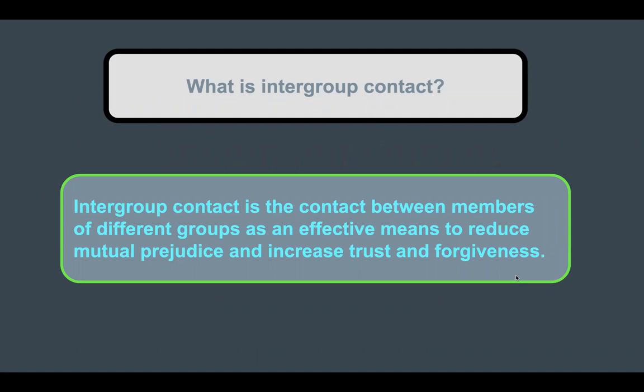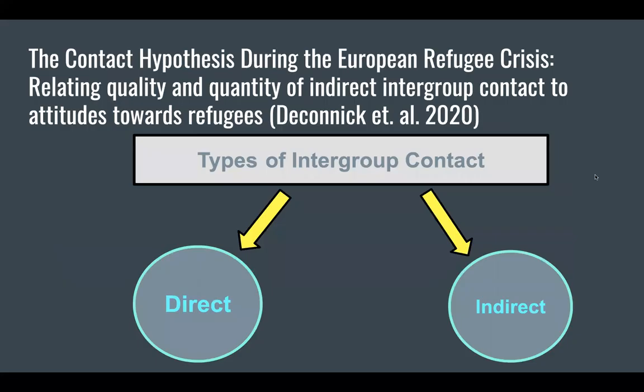What is intergroup contact? Intergroup contact is defined as the contact between members of different groups as an effective means to reduce mutual prejudice and increase trust in the community, and forgiveness.